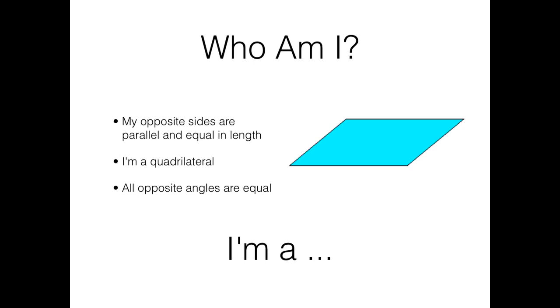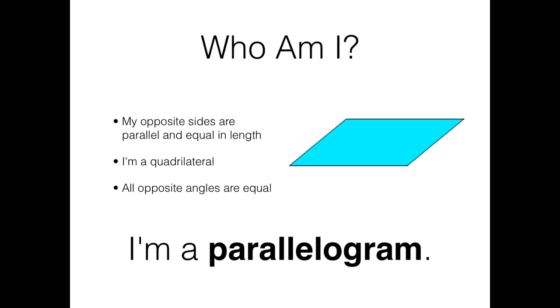Who am I? My opposite sides are parallel. That means they're lines that never meet. They're also equal in length. These ones are equal in length. And these ones are equal in length. I'm a quadrilateral. Remember, quad means four. I have four sides. All my opposite angles are equal. These two are equal. And these two are equal. I'm a Parallelogram.